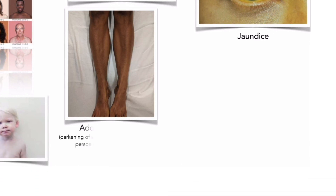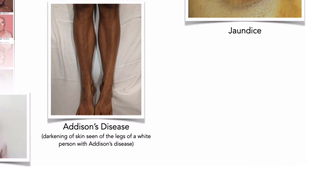Some tumors affect the pituitary gland and result in the secretion of large amounts of melanocyte-stimulating hormone, causing a darkening of the skin as if the individual has an extremely bronze tan. In Addison's disease, the pituitary gland secretes large quantities of adrenocorticotropic hormone, which is structurally similar to melanocyte-stimulating hormone. Thus, the effect of adrenocorticotropic hormone on skin color is similar to that of melanocyte-stimulating hormone. We will learn more about these hormones in module 10.